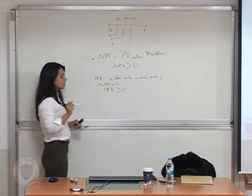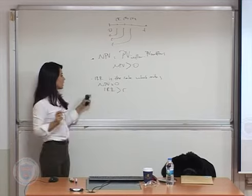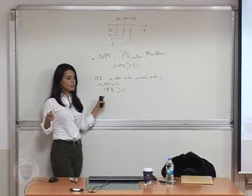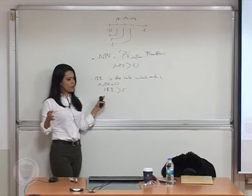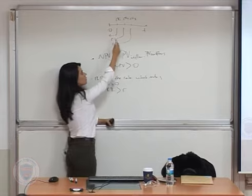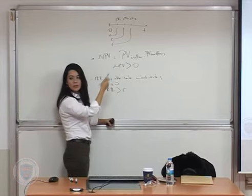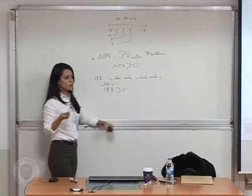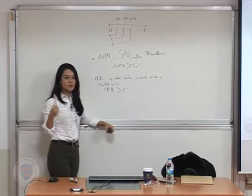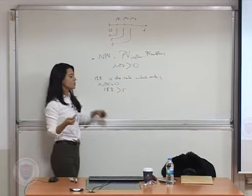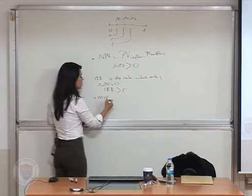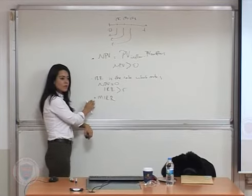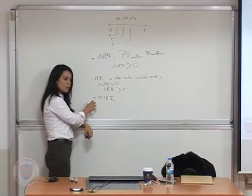Another assumption with IRR is that it assumes reinvestment at the IRR rate, not at the discount rate, which is not very realistic. Whenever you're thinking about reinvestment of cash flows from the project, IRR assumes you are reinvesting at the IRR rate. So we can use MIRR — the Modified Internal Rate of Return — which is more realistic because it assumes reinvestment at the opportunity cost of capital in the economy.